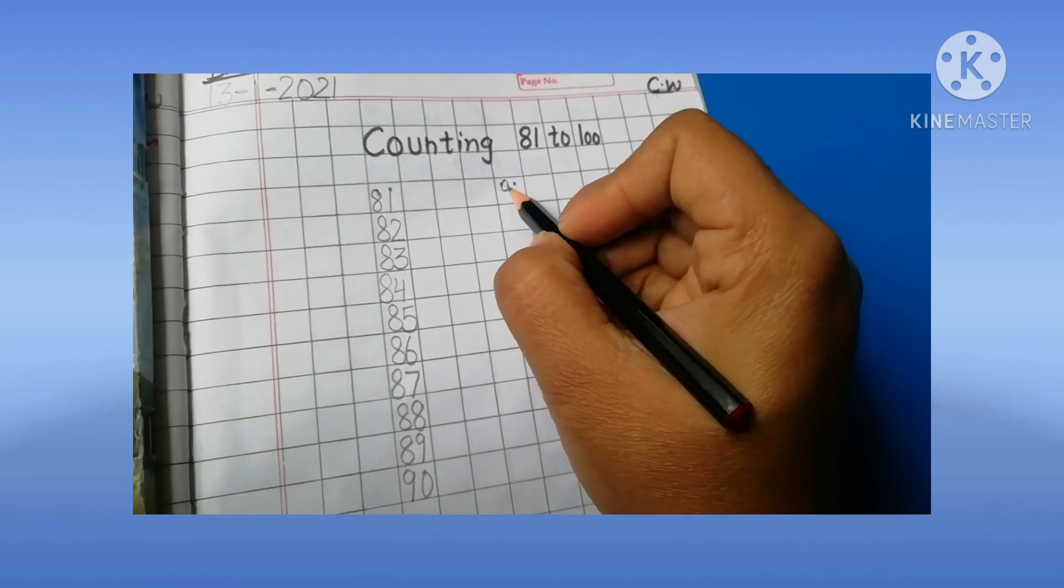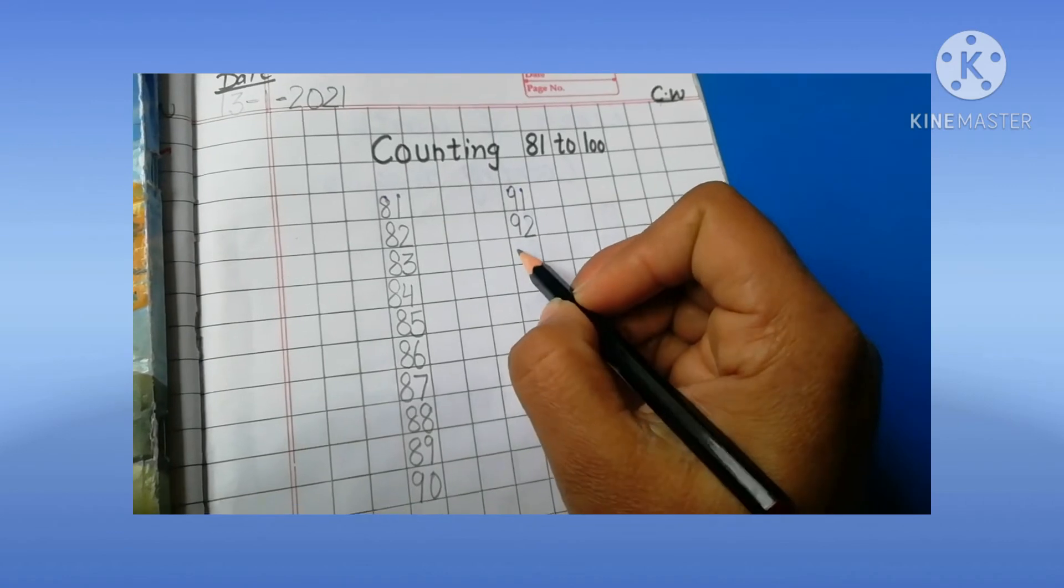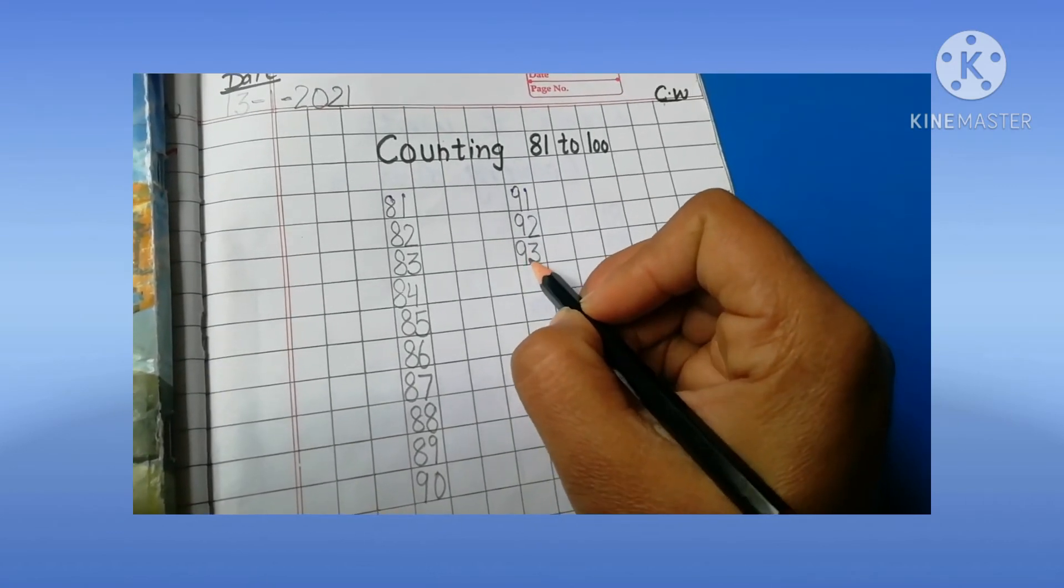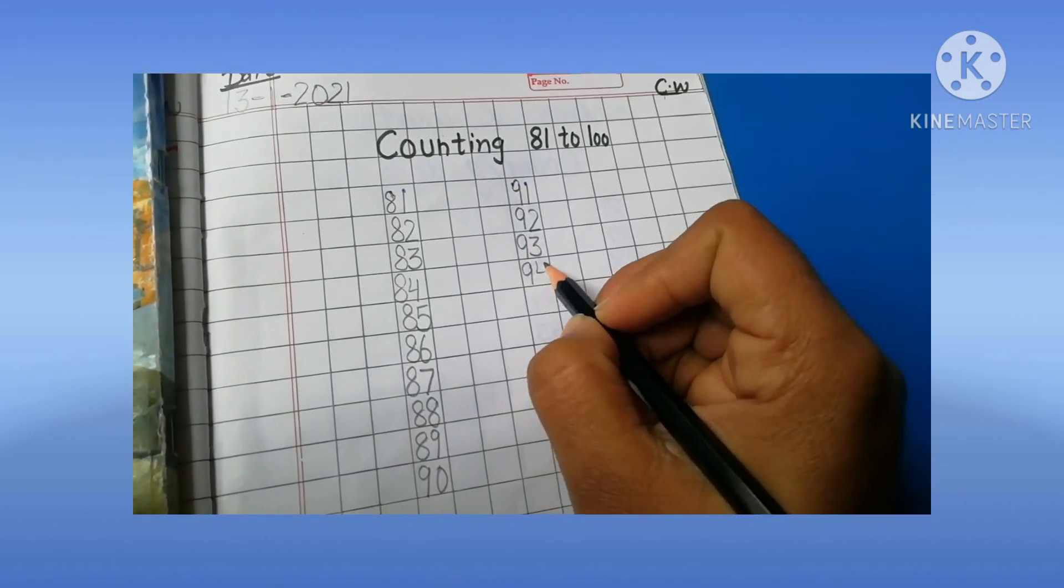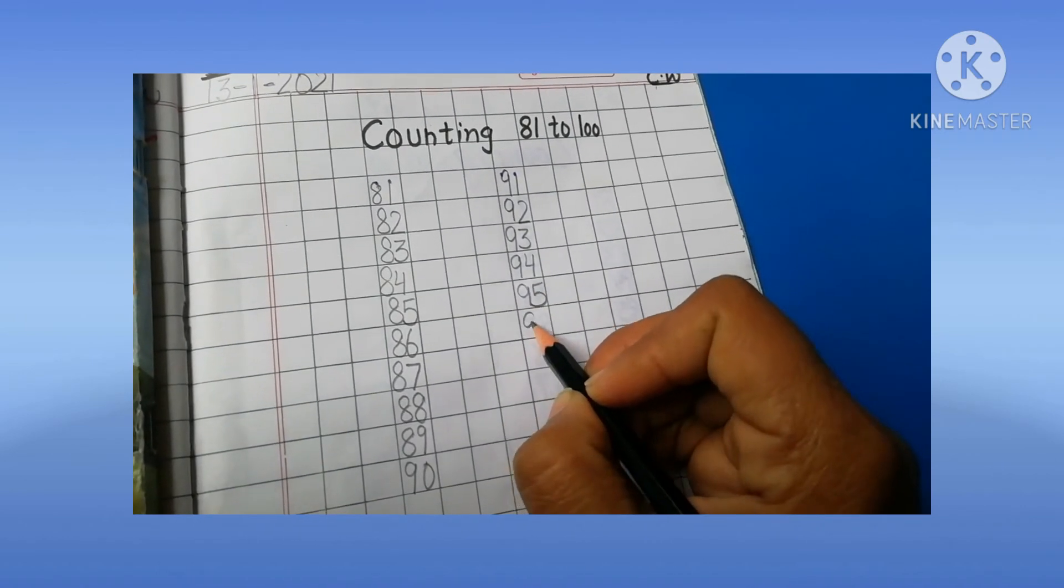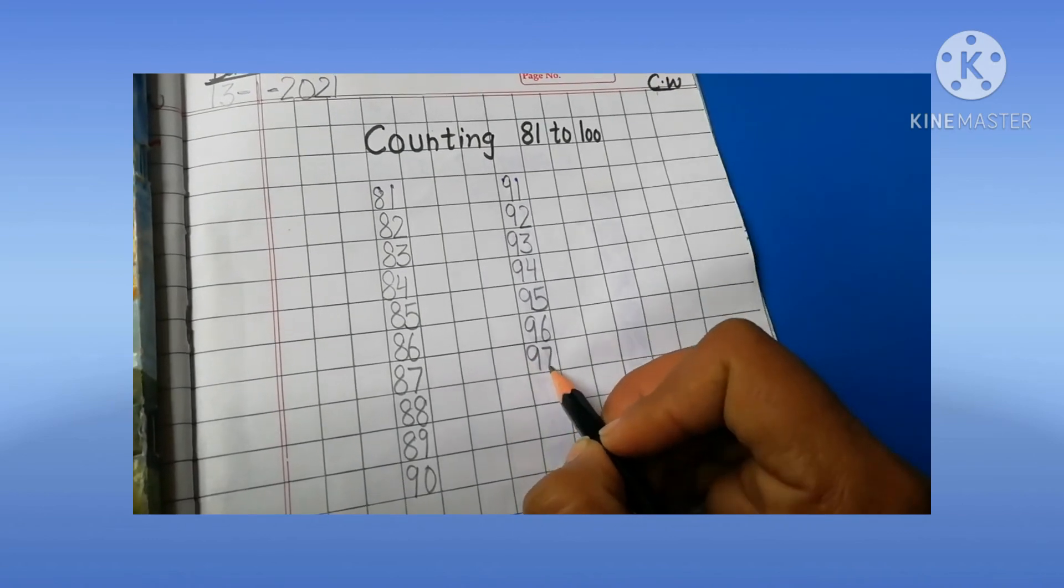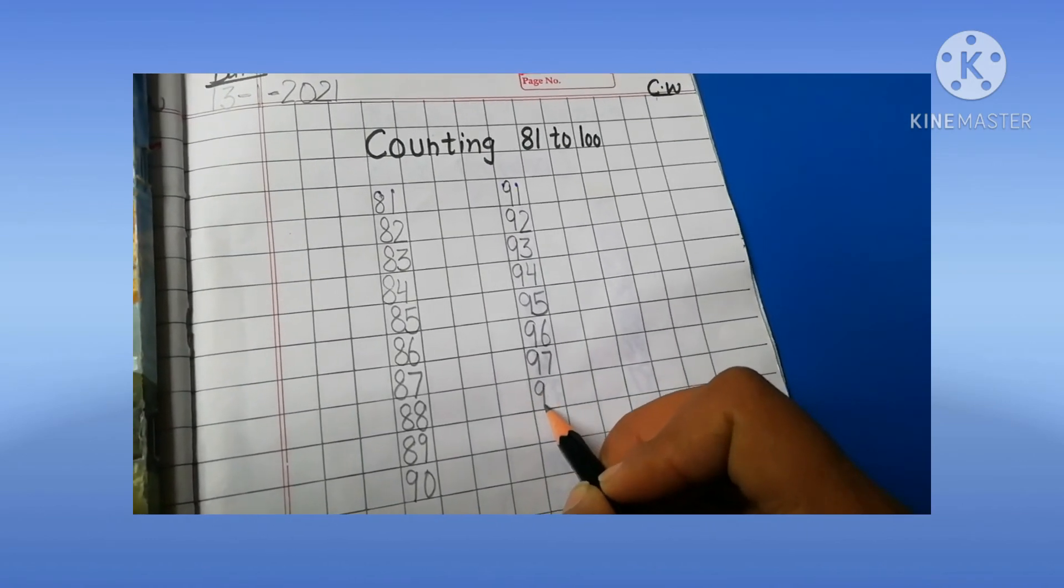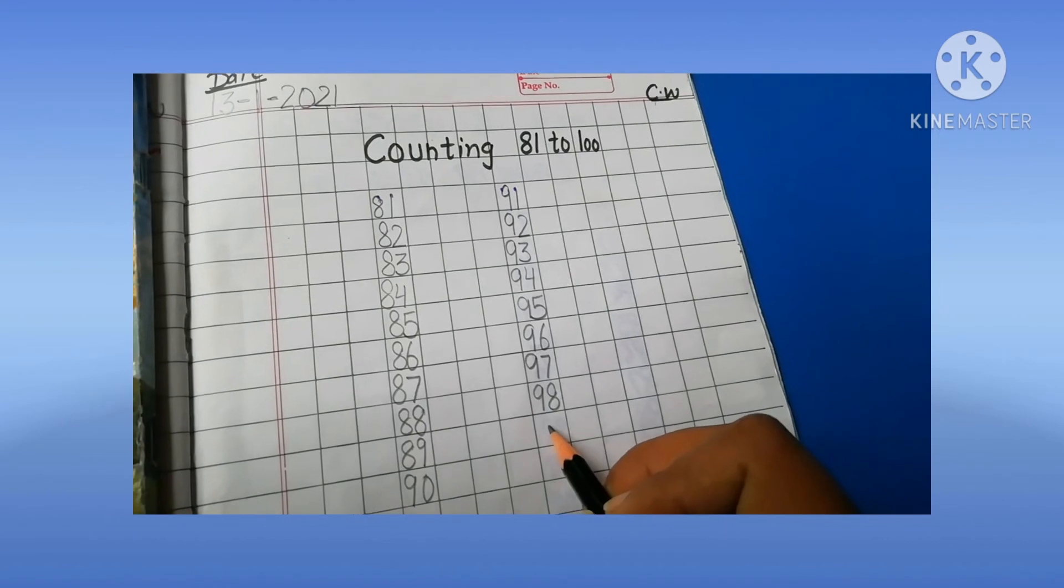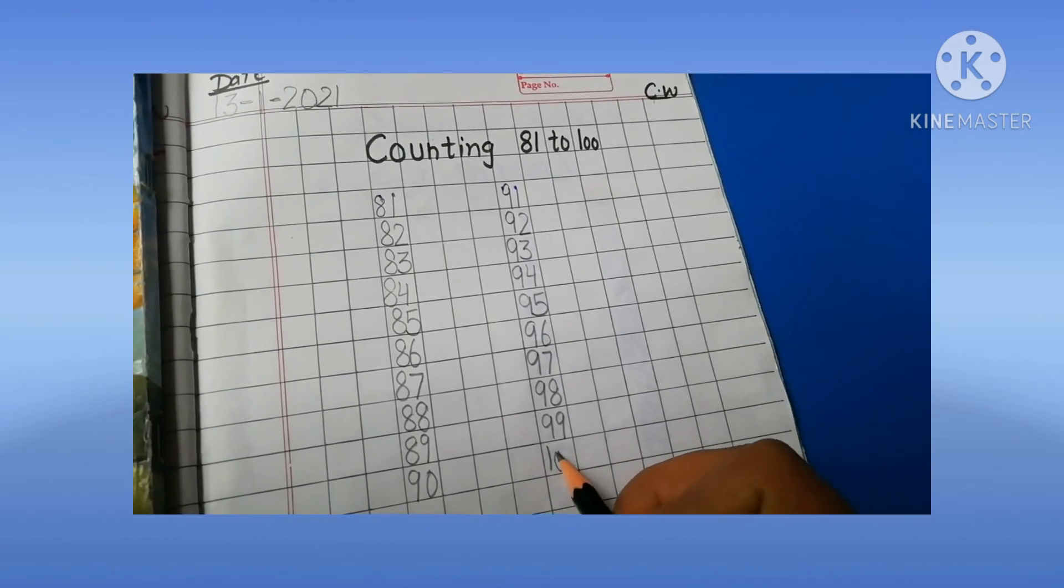Next is 9-1, 91. 9-2, 92. 9-3, 93. 9-4, 94. 9-5, 94. 9-5, 95. 9-6, 96. 9-7, 97. 9-8, 98. 9-9, 99. 1-00, 100.